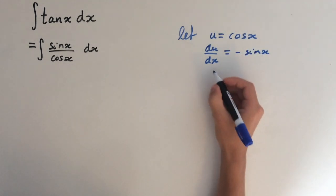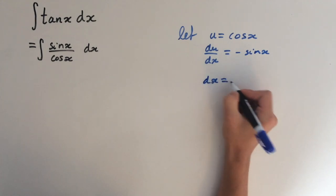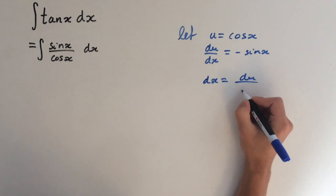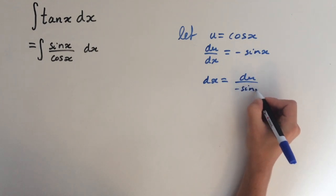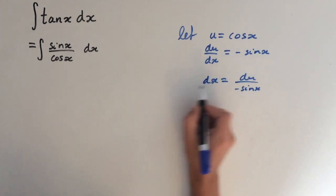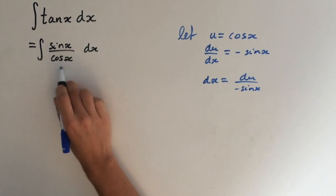So if we arrange for dx, dx will give us du over minus sin(x). So I just brought this up here and divided by minus sin(x). So now we can substitute this in here and cos equals u.